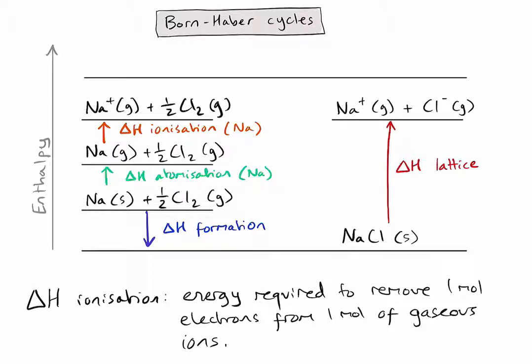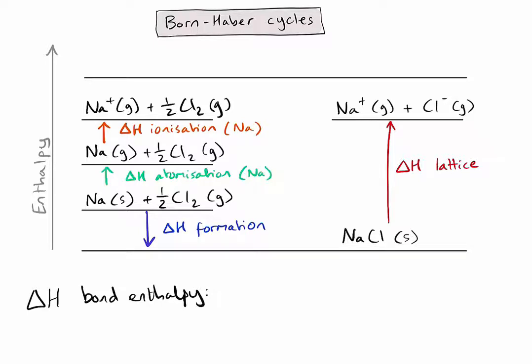Now that my sodium ions in the gaseous state are where I need them to be, we can focus on the chlorine. We need to get from half a chlorine molecule in the gaseous state to a chloride ion in the gaseous state, and we've got two steps to do that. First, we want to be dealing in gaseous chlorine atoms, not molecules, so we need to consider how to break a molecule of chlorine into atoms. This happens to be the average bond enthalpy, and the bond enthalpy specific to chlorine is the amount of energy required to break one mole of a bond in a gaseous molecule.